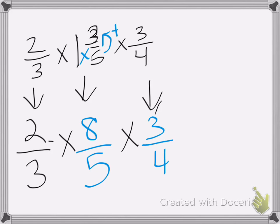Now before I do anything, I want to cancel. It's a lot easier to cancel now than later. So I'm going to look, what can I cancel? Well, the 3 and the 3 I can cancel, the 4 and the 8 I can cancel, 4 becomes a 1, 8 becomes a 2, and those become 1s. So I'm left with 2 over 1 times 2 over 5 times 1 over 1.